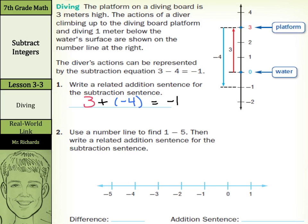Number two: use a number line to find one minus five, then write a related addition sentence for that subtraction sentence. If we come here and start at zero and go out to one — that's my one.